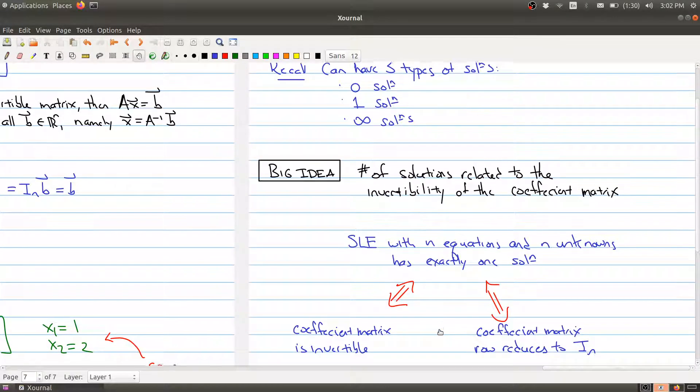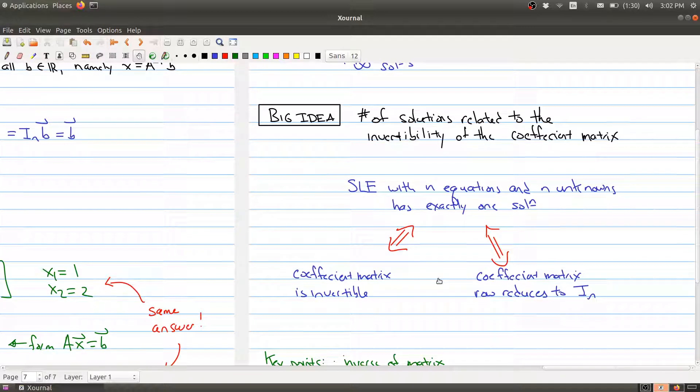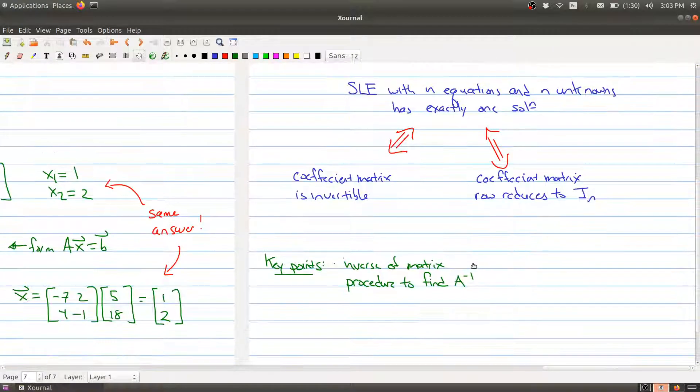And that only happens if your matrix is invertible. So one of the takeaways here is that we're introducing invertibility and why are we interested in invertibility because of this relationship between all of these different topics. And namely, it's telling us when we have exactly one solution to our system of linear equations.